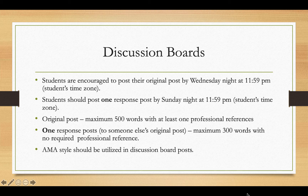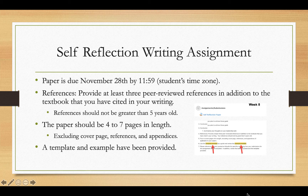You still have to reference anything that you discuss that is outside the reference you used or the textbook. The last graded item is the self-reflection writing assignment, due by November 28th at 11:59 p.m., student's time zone. We require you to use three peer-reviewed references in addition to your textbook, for a minimum of four references total. References should not be greater than five years old, and the paper itself should be about four to seven pages in length, excluding the cover page, reference pages, and any appendices.